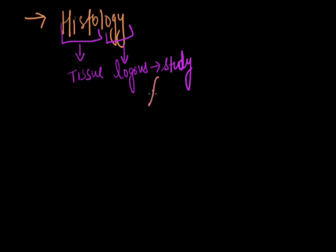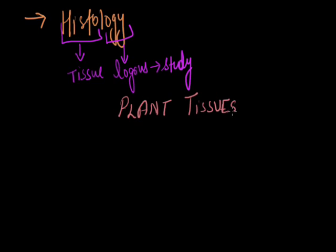Plant tissue is of two types: meristematic tissue and permanent tissue.